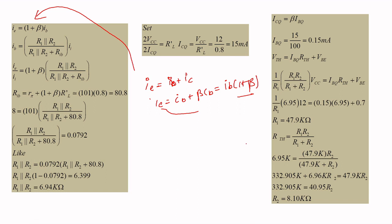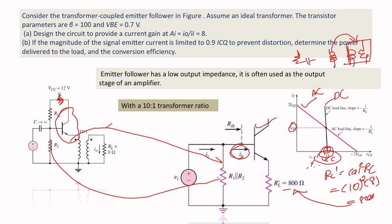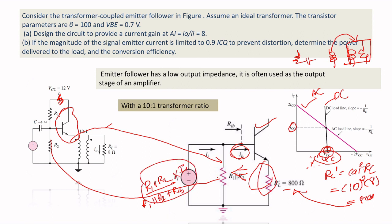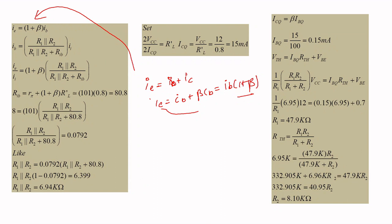Applying the current divider rule carefully: IE / Ia = (1 + β) × [R1 ∥ R2 / (R1 ∥ R2 + R_ib)]. The internal base resistance R_ib = r_π + (1 + β) × RL_dash. This formula simplifies to approximately (1 + β) × RL_dash = (1 + 100) × 800 = 80,800 ohms, which is approximately 80.8 kilohms.